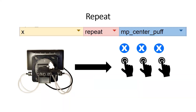Repeat is a fairly simple output function. If I set X to repeat, as long as I'm blowing into the center sip and puff it will repeatedly tap the X button in the game instead of holding it down. This is helpful in games where you need to rapidly tap a specific button. For example, when you sprint in Red Dead Redemption 2, you need to keep tapping X — the faster you tap, the faster you sprint. With repeat set, the user can just hold the blow and it will repeatedly tap for them.